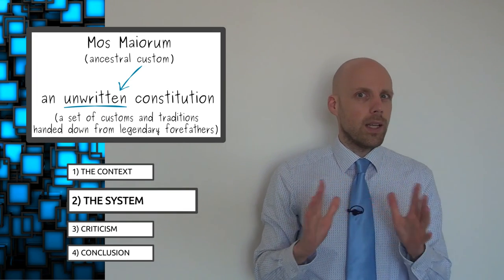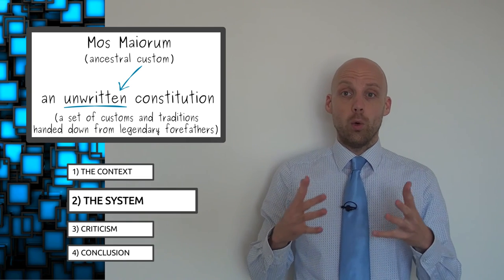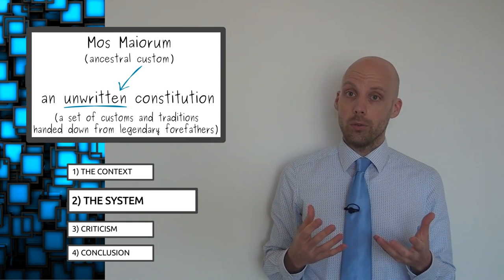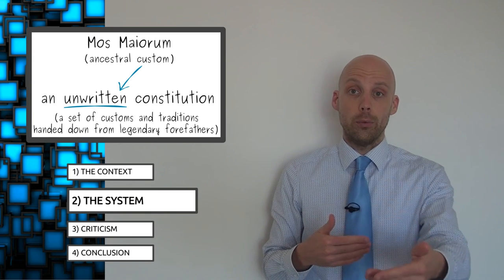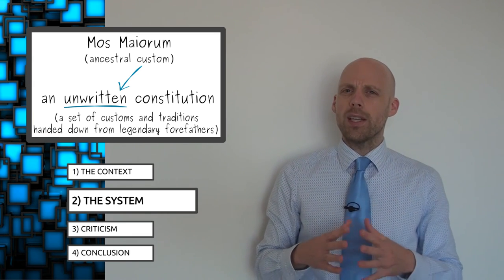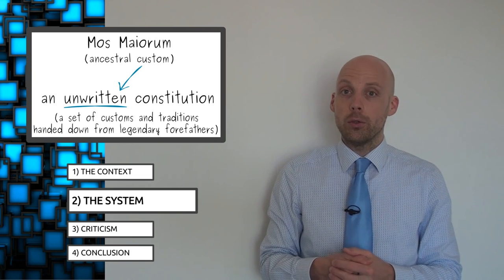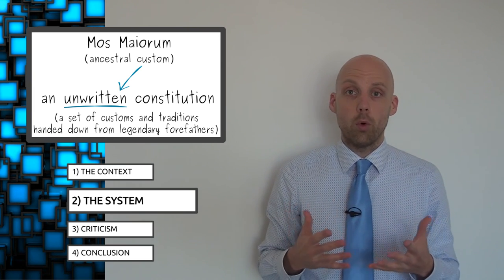First, I should make it clear that Rome didn't have a constitution in the sense of a single written document like most modern countries do. It was instead a set of unwritten customs and political traditions handed down through the ages. The Romans had idolized their forefathers, and the notion of unwritten ancestral custom, or mos maiorum, was very important to them.